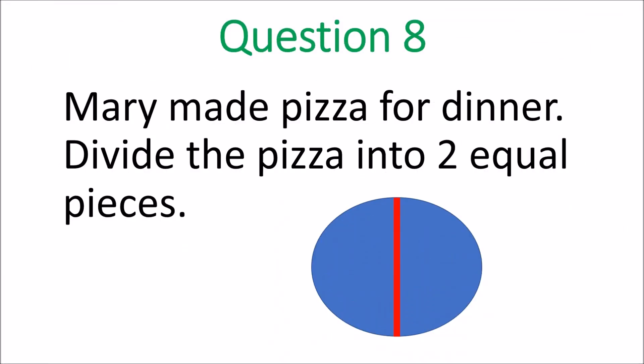Question 8. Mary made pizza for dinner. Divide the pizza into two equal pieces. Make sure they use a ruler or a straight edge. It has to be at about the middle, across or down, any one. But you use one line to divide it into two equal pieces. So any way they do it, once it's about half, they get the points.